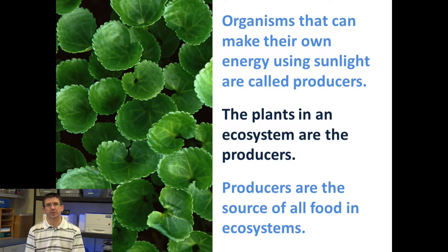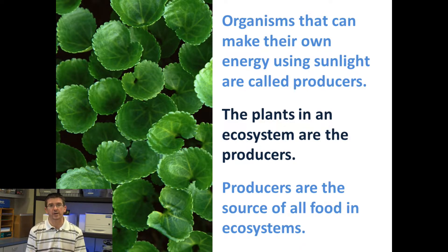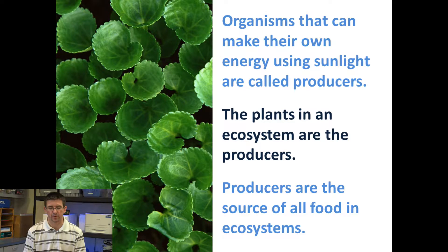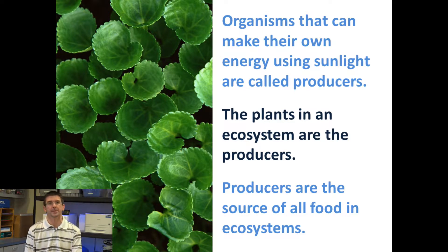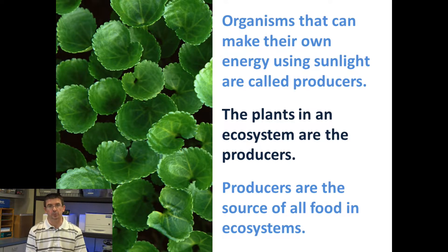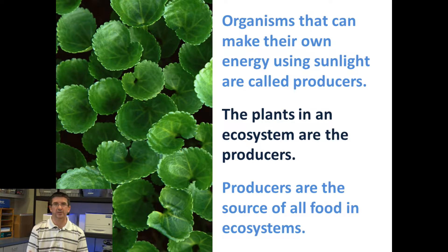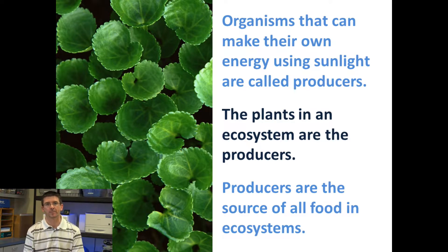The first classification of organisms are called producers. Producers are organisms that make their own food using the sun's energy through the process of photosynthesis — which of course means producers are your plants in the ecosystem. Ultimately, producers are the source of all the food in the ecosystem, because the energy goes from the sun to the plants, and the plants produce food from that sunlight.